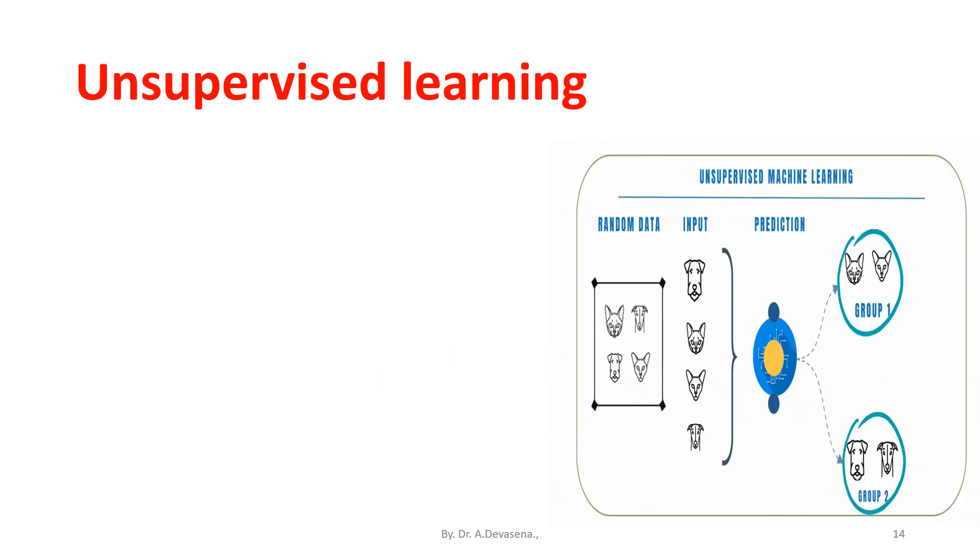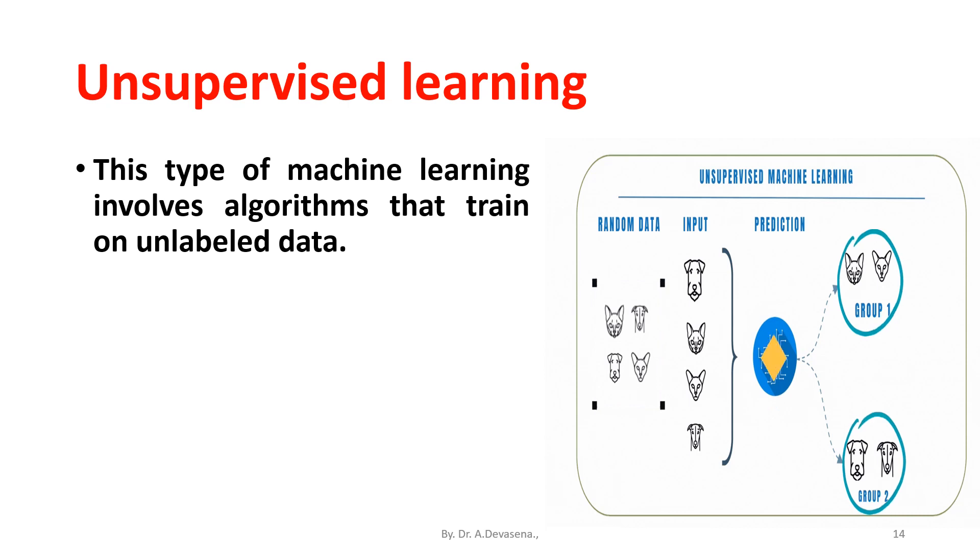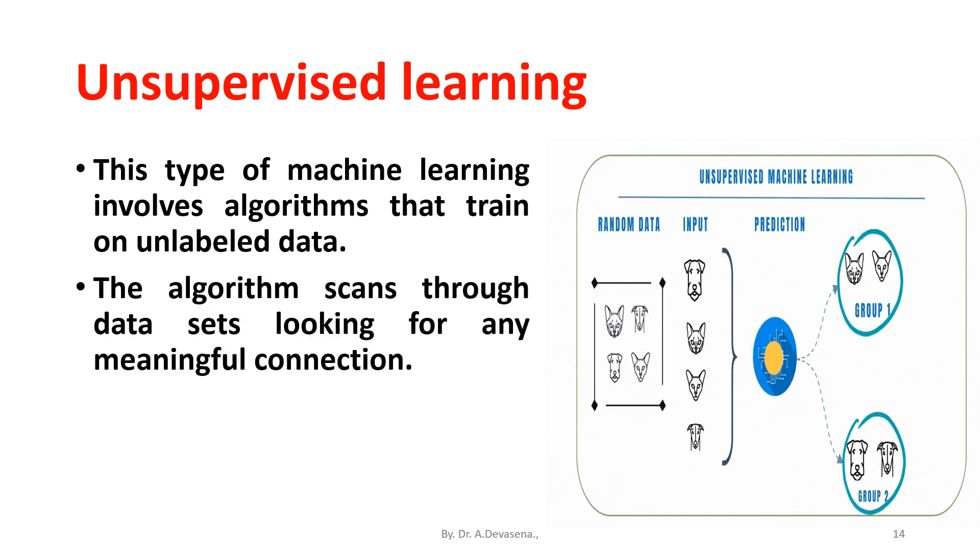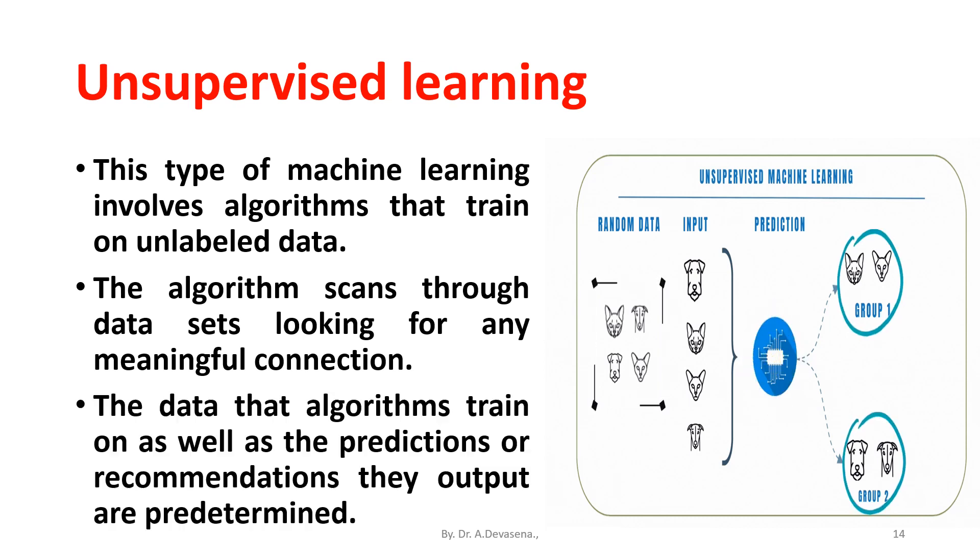Unsupervised learning: this type of machine learning involves algorithms that train on unlabeled data. The algorithms scan through data sets looking for any meaningful connection. The data that algorithms train on, as well as the predictions or recommendations, the output are predetermined.